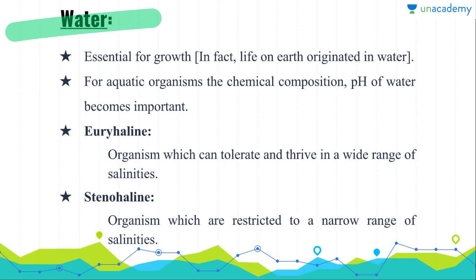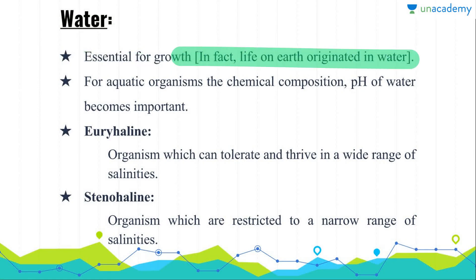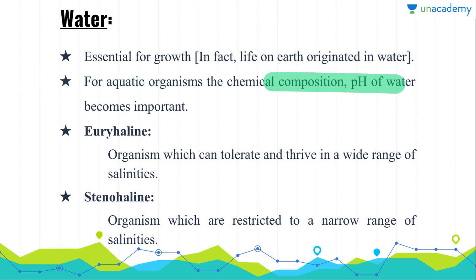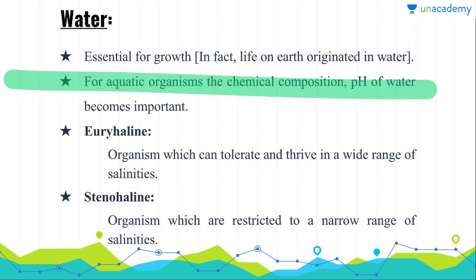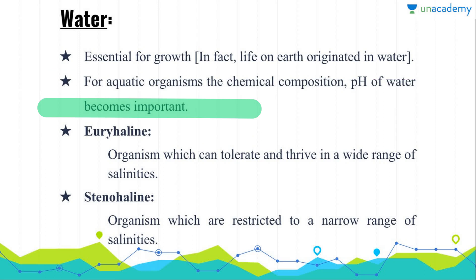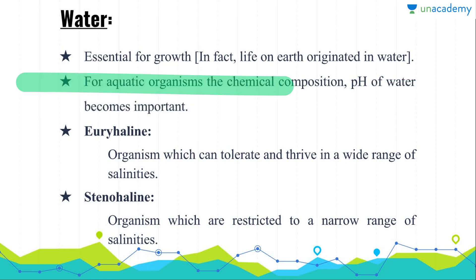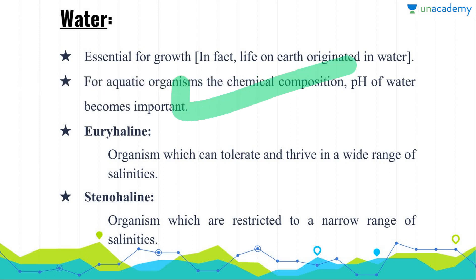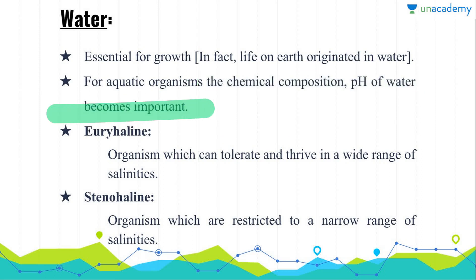Now we have water. It is the second most essential environmental factor and it is very essential for growth. In fact, life on earth originated in water. Now there is a misconception about aquatic organisms — that they don't have any water-related problems — but this is very wrong. The chemical composition and the pH value of water is very important for aquatic organisms, because even slight compositional changes in the chemical composition and pH value of water can become very disastrous for aquatic organisms.